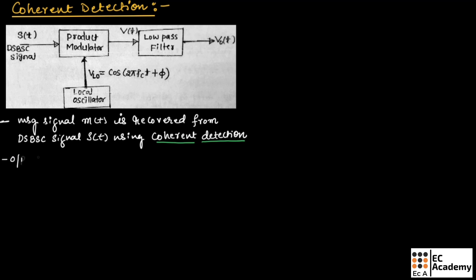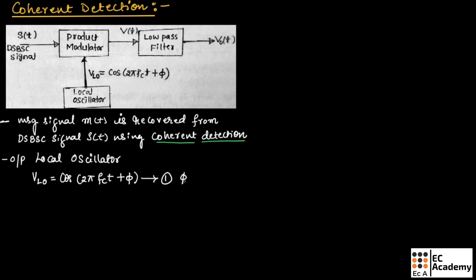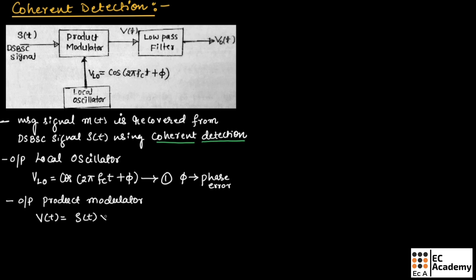Let us consider the output of the local oscillator, given as V_LO = cos(2π f_c t + φ). Let us take this as equation number 1, where φ is the phase error or phase difference. The output of the product modulator is given as V of T = S of T multiplied with V_LO. Let us call this equation number 2.